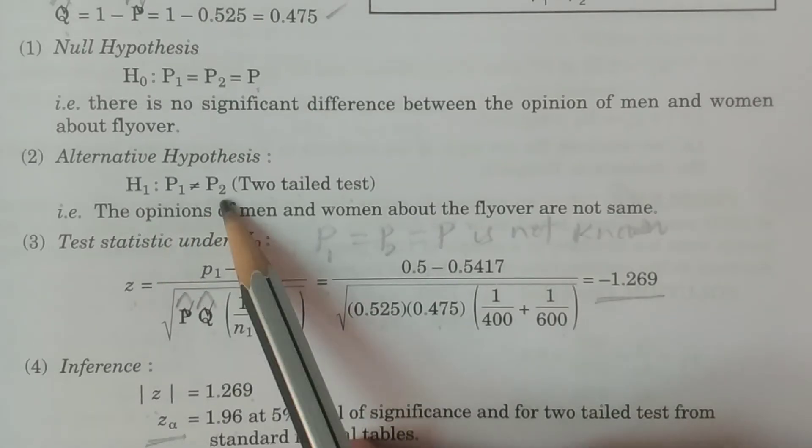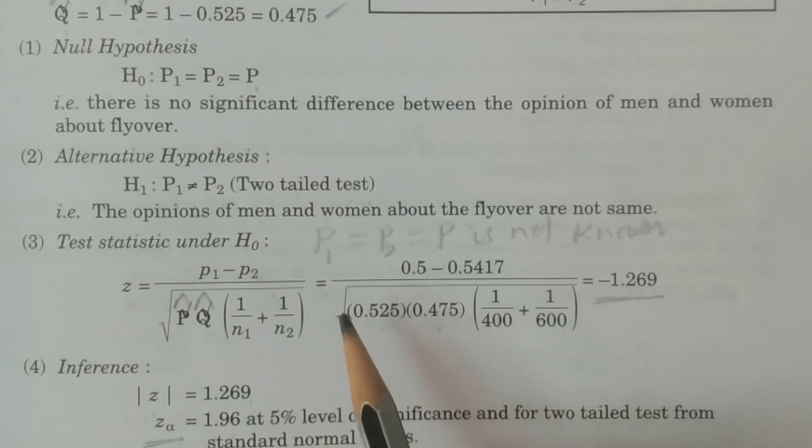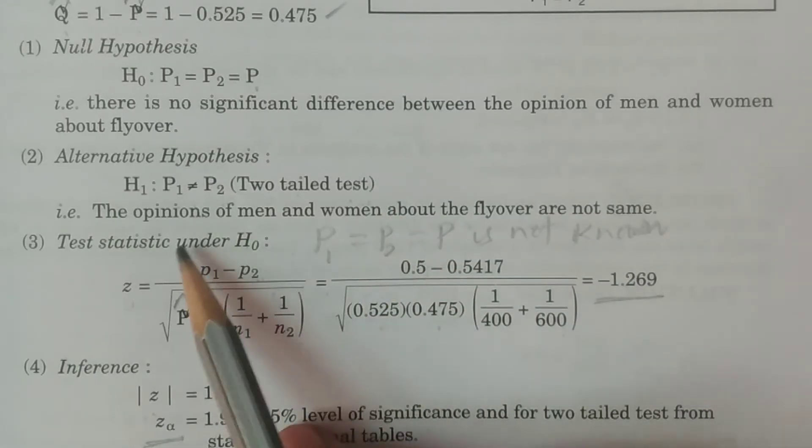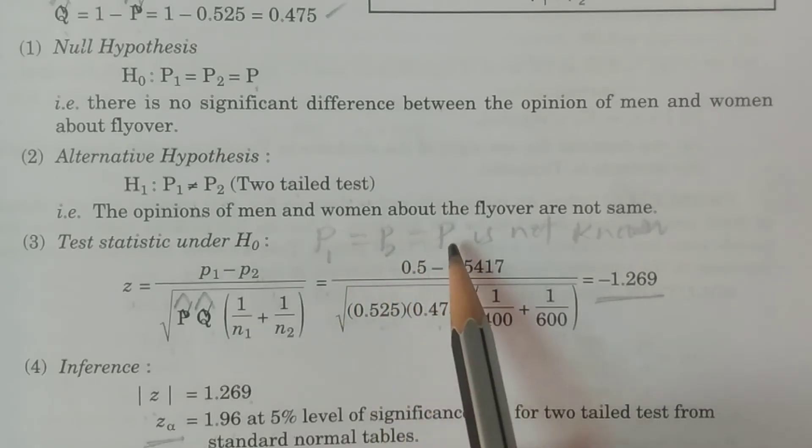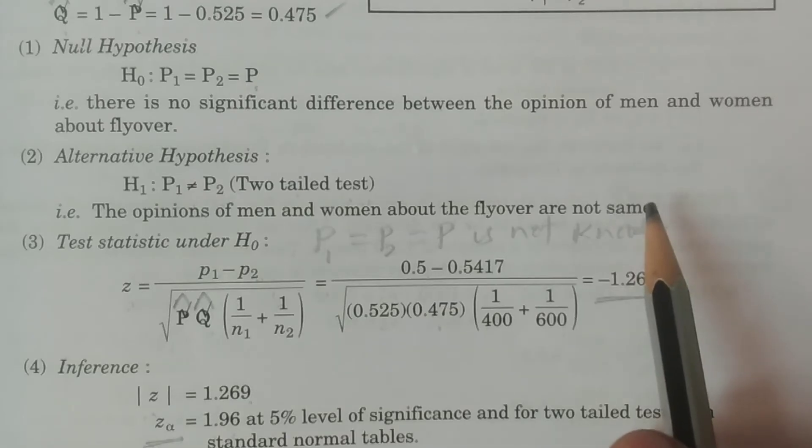H1: capital P1 not equal to capital P2, which is a two-tailed test. The alternative hypothesis is that the opinions of men and women about the flyover are not the same. It's a two-tailed test.